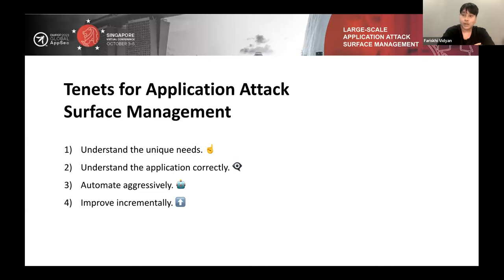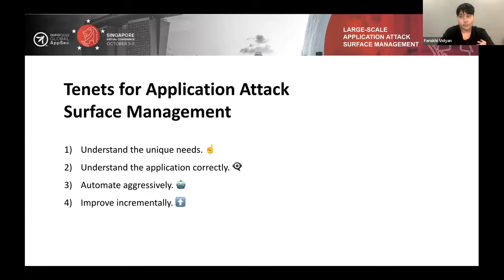We also want to automate aggressively, because in agile organizations change can happen very often — maybe tomorrow your application already has new API endpoints or changed behavior. Rather than doing attack surface enumeration manually, we want to automate the process. We can start small — we don't need 100% coverage or high quality context from the beginning. We can start small and then improve quantity and quality incrementally.